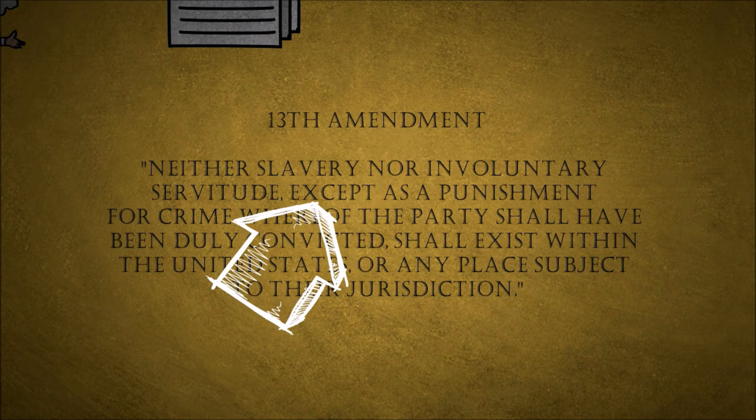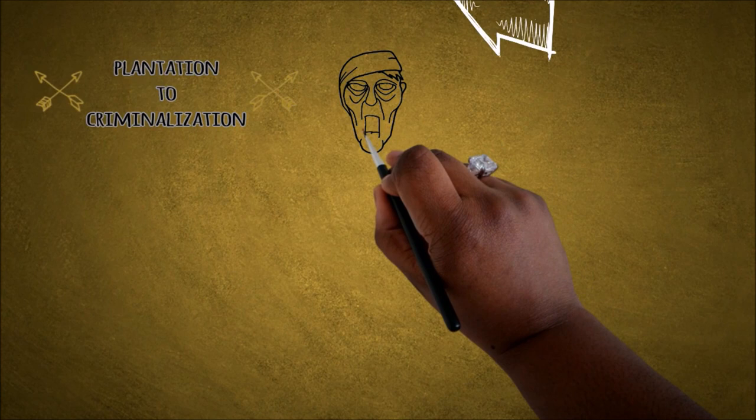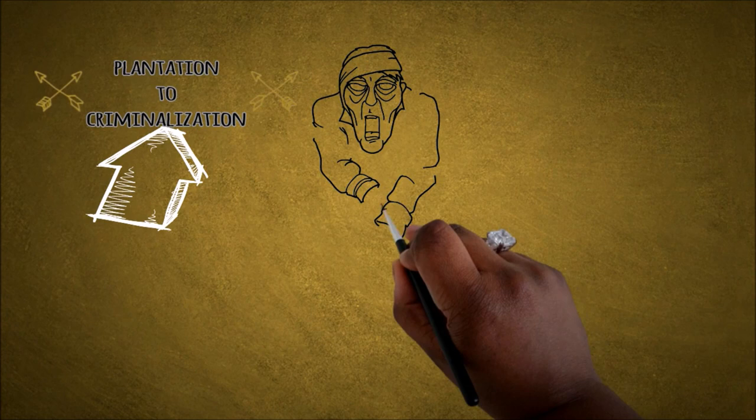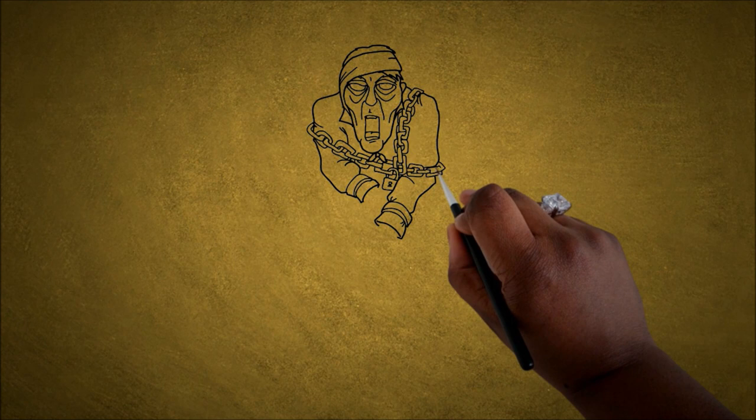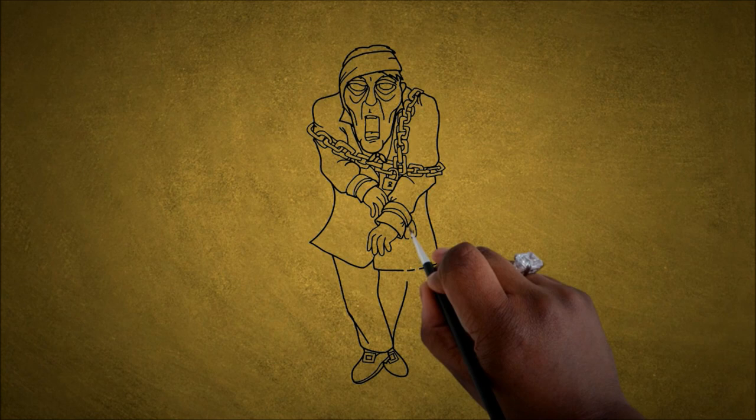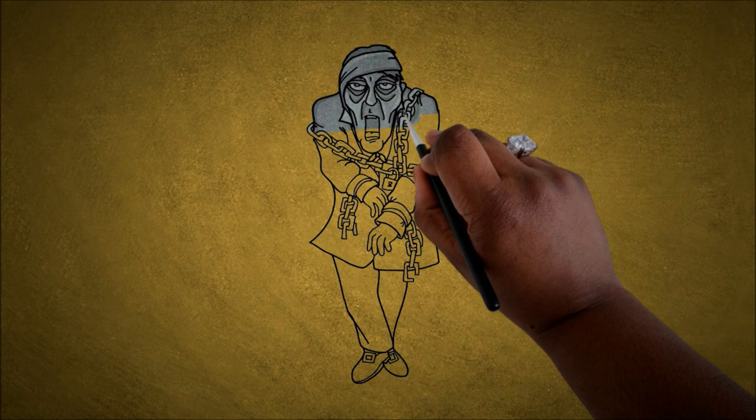And so slavery moved from the plantation to prison. What we knew as obvious slavery would change into the present mechanism of criminalization. Thanks to those six words, ever since the 1860s, states have been taking advantage of forced labor to perform a variety of tasks — from road maintenance to making license plates. And in recent years, they've also licensed out that labor, allowing prisons to profit tremendously by leasing their prisoners to third parties.